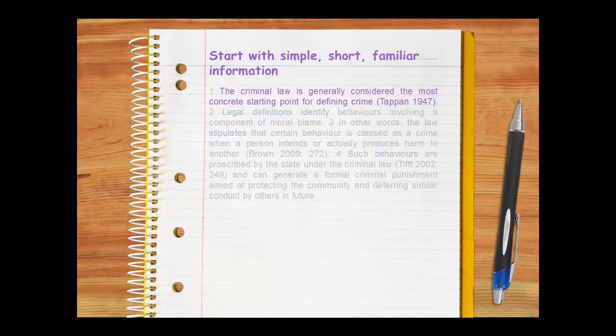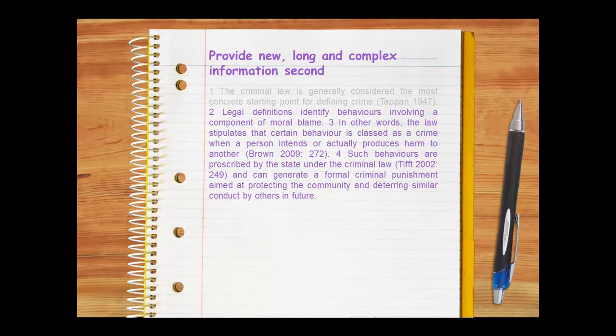In addition, the paragraph begins with simple, short, familiar information and concepts, which are followed by new, long, complex information and ideas. The paragraph's topic development structure and its movement from simple, short, familiar information to new, long, complex information help the reader prepare for what comes next and greatly assist cohesion.